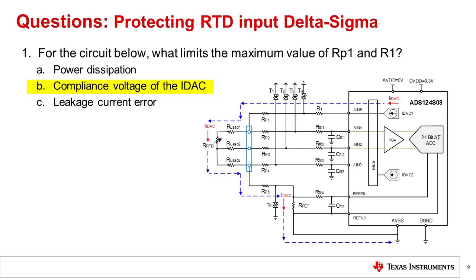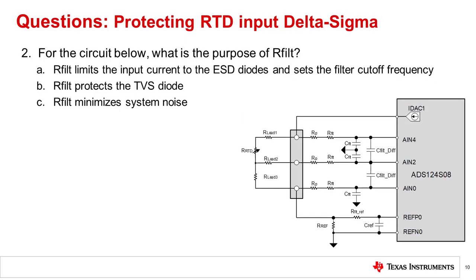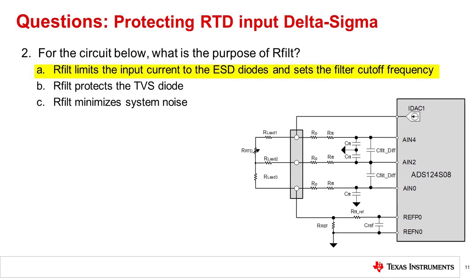Answer A is not correct, as increasing the resistance will actually reduce power dissipation. Answer C is not correct, as the leakage current error is not impacted by RP1 and R1. Question 2: for the circuit shown, what is the purpose of RFilt? The correct answer is A — RFilt limits the input current to the ESD diodes and sets the filter cutoff frequency.